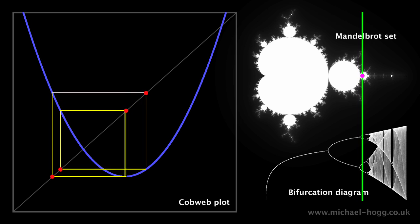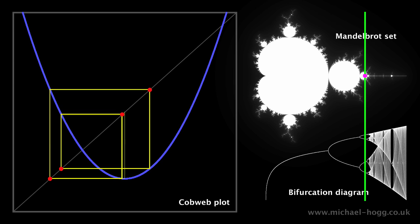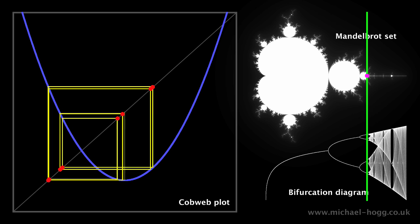And now, something very surprising will happen. The orderly behavior we've been seeing will suddenly disappear, and the cobweb plot will become a mass of chaotic lines.